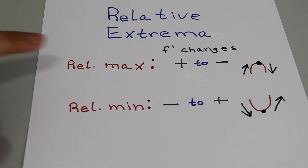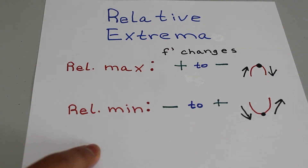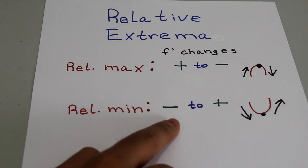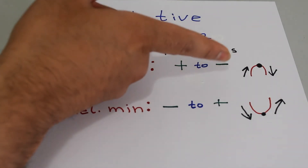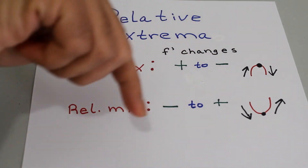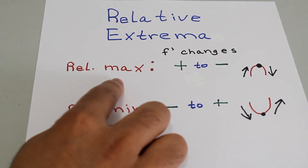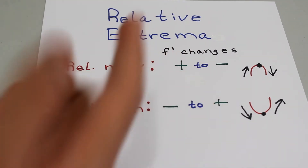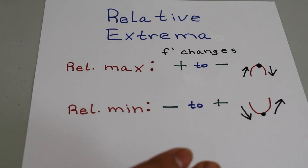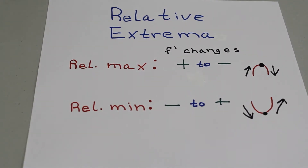It's very important to remember: we have a relative maximum when f'(x) changes from positive to negative, and a relative minimum when f'(x) changes from negative to positive. A simple way to remember this — before a relative max the function is increasing, then decreasing, so the slope goes from positive to negative. For a relative minimum it's the opposite: decreasing then increasing, slope negative then positive.